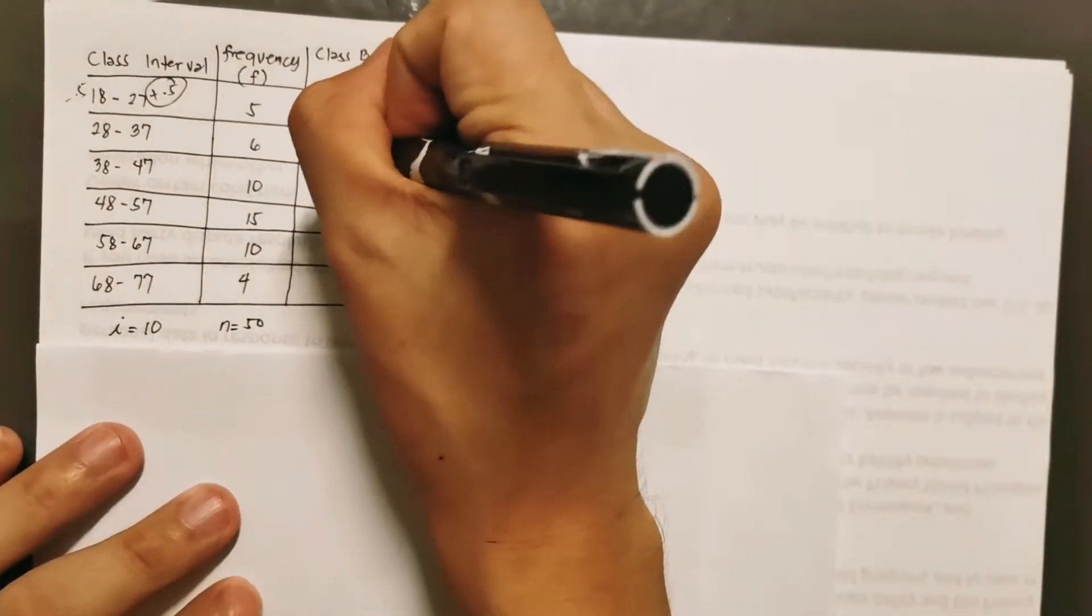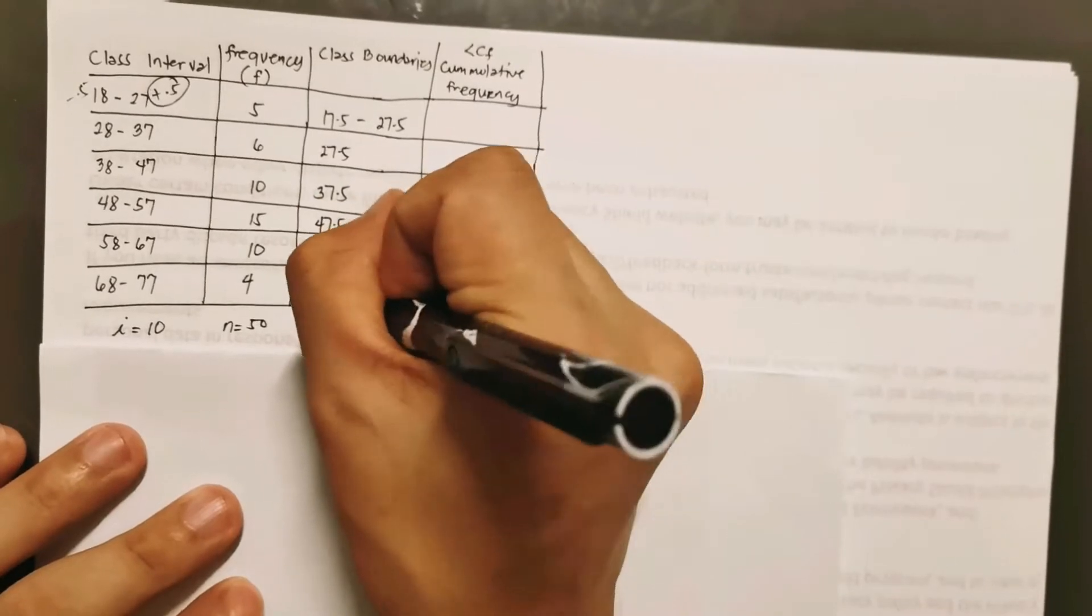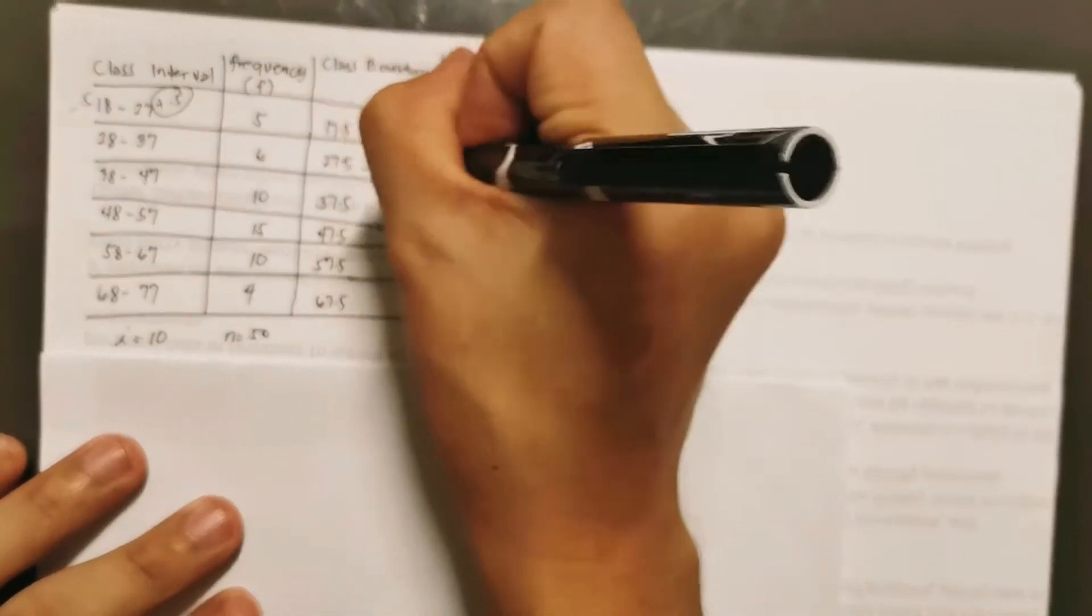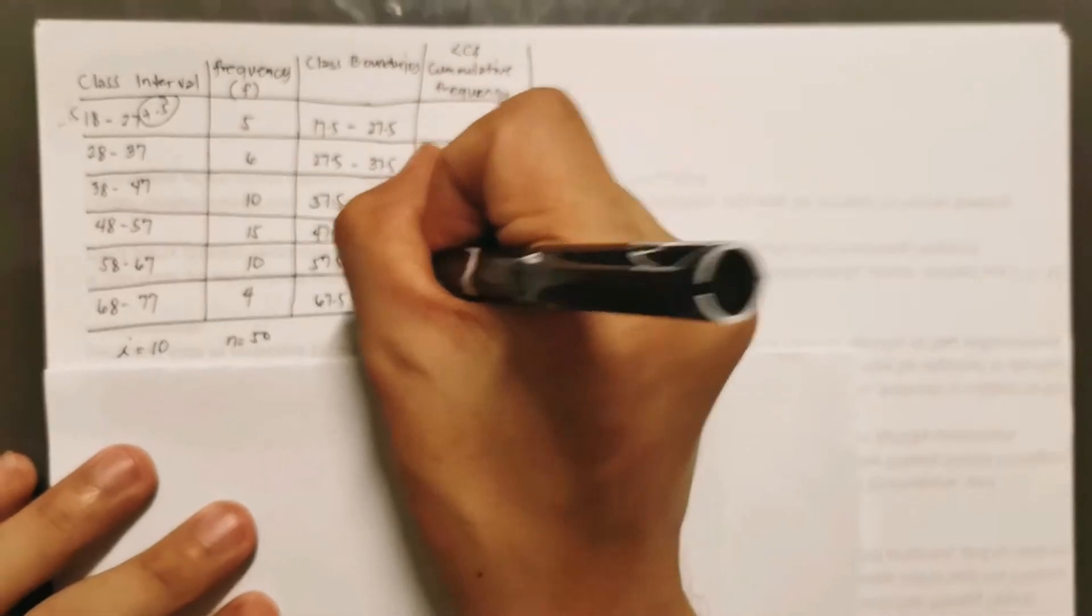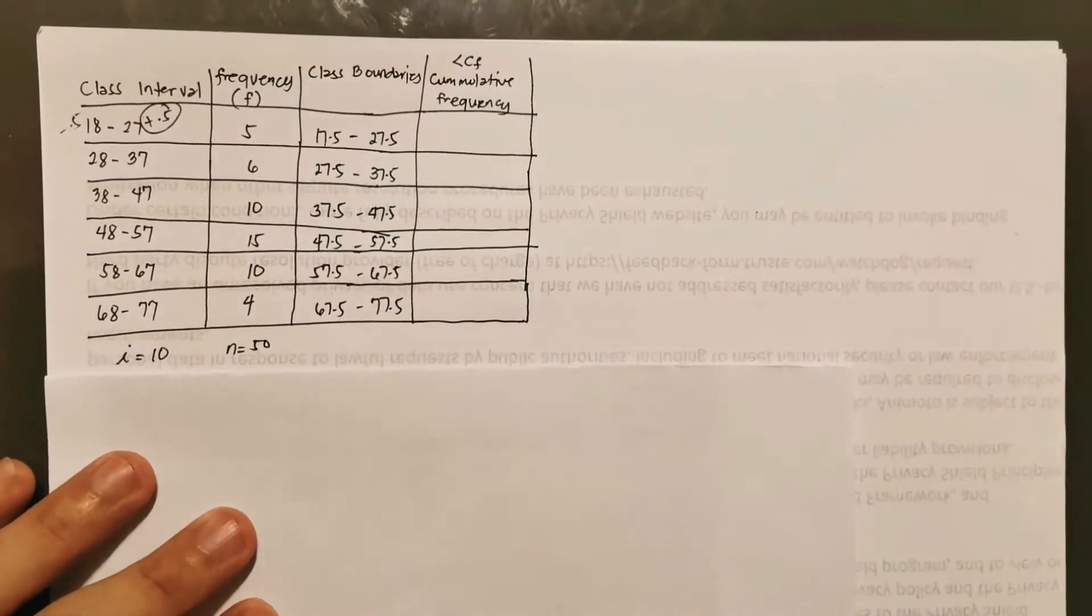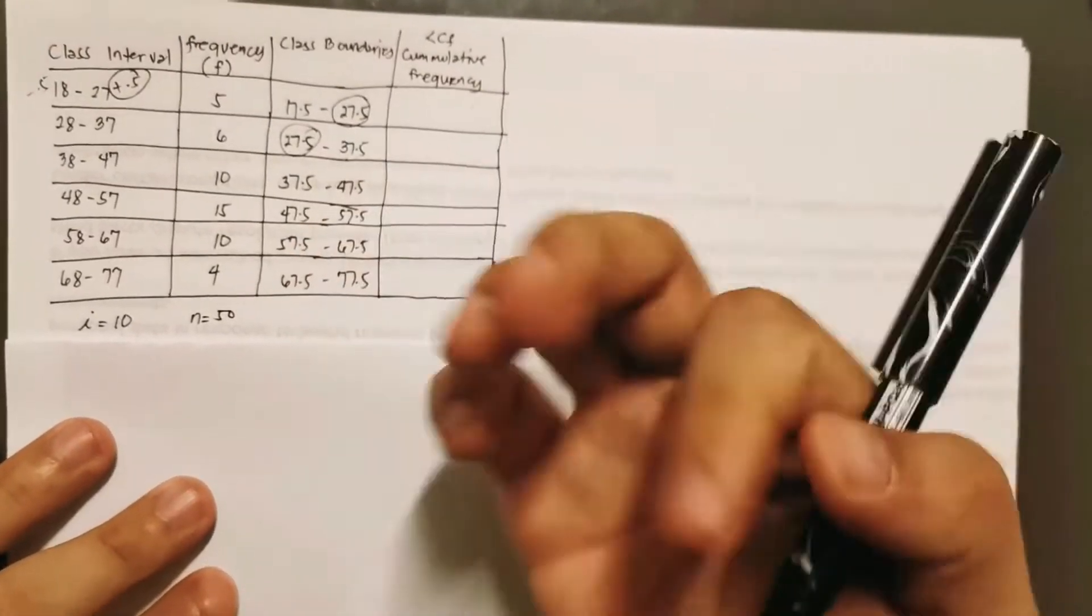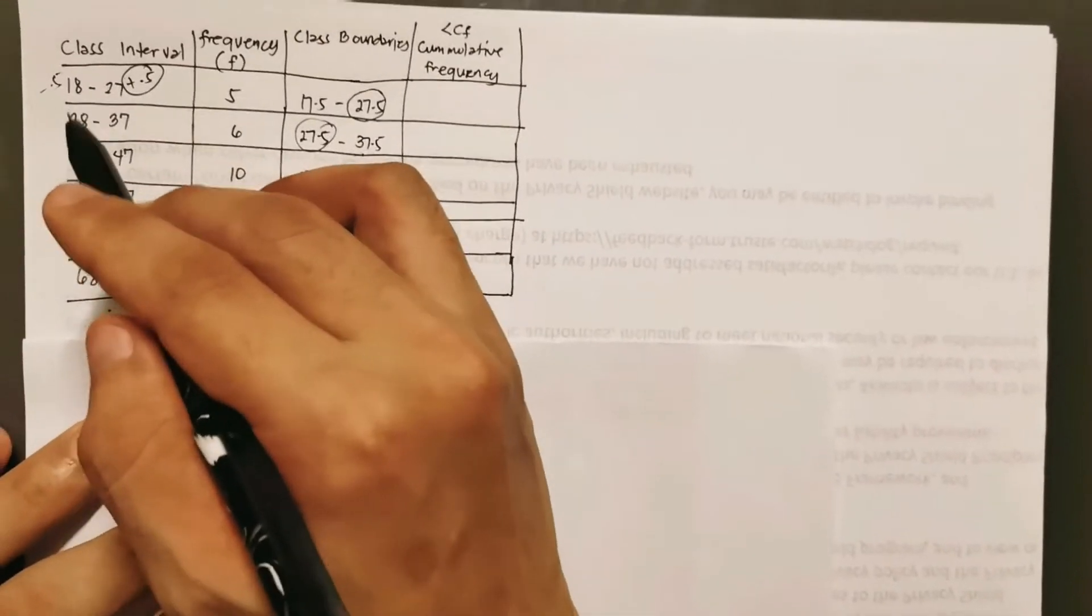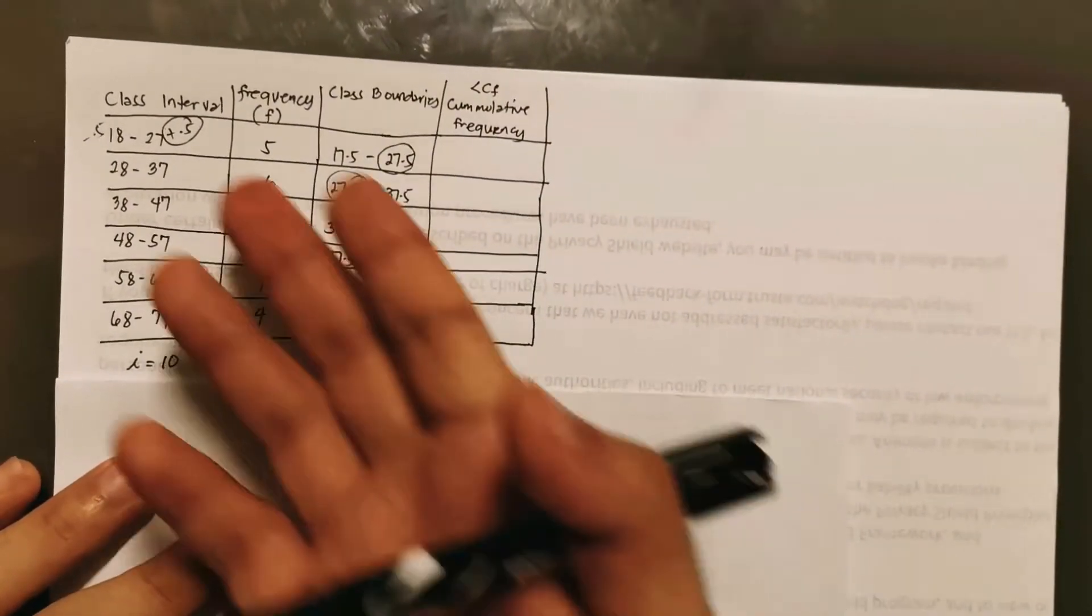Okay, so 17.5 plus 10, that's 27.5, 37.5, 47.5, 57.5, 67.5. And then also the same thing for the upper boundary. This is 37.5, 47.5, 57.5, 67.5, and of course, 77.5. So you notice, we completed it, it's a lot easier. Okay, it's easier than you can imagine. So you notice that in here, between the upper boundary and then the lower boundary of succeeding intervals, there is no gap. But if you look at the interval, between the upper limit and then the lower limit of succeeding intervals, there is a gap of 1. That's why this is called a true boundary. Because indeed, there is no more other perfect boundary for our interval.